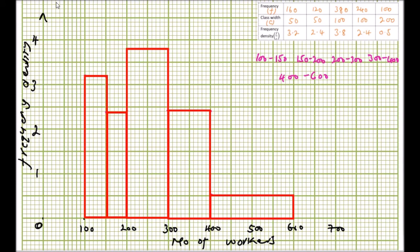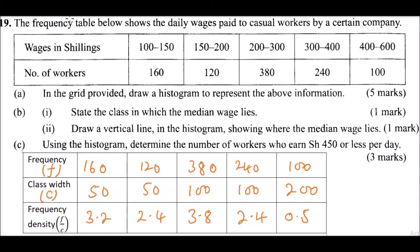We have now plotted the frequency density against the wages to produce the histogram. Moving to part b, roman numeral one: we need to state the class in which the median wage lies. Adding all frequencies: 160 + 120 + 380 + 240 + 100 = 1000 — wait, the total is 1000, so the median is at position 500. The median lies in the class 200 to 300, which we award one mark.